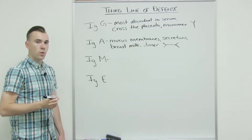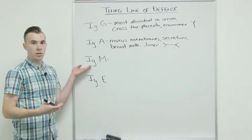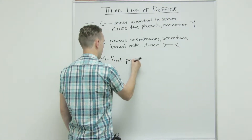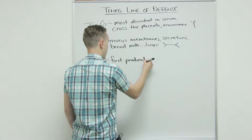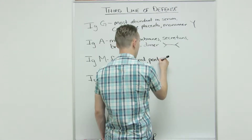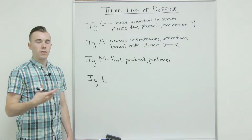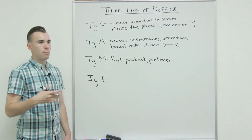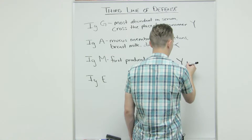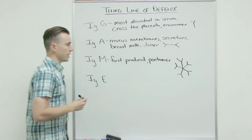IgM — the most important thing to know is that it is the first antibody produced. So when you're first exposed to a microbe and you're building memory, IgM is the antibody that will be first produced. Its shape is a pentamer — pentam means five, so there are five of them together. Because of this pentamer structure, meaning five together, you can infer that this antibody is the biggest and most complex, and it looks like a snowflake.